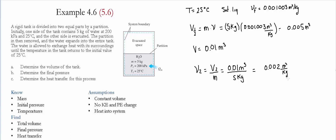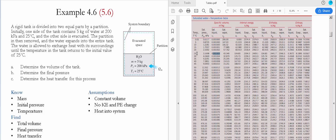We go to table A4 to see how the specific volume compares to the ranges of the saturated liquid and saturated vapor. At 25 Celsius, the value of 0.002 is between the saturated liquid and saturated vapor, which means we have a saturated mixture. For this saturated mixture the pressure is the saturated pressure, equal to 3.1698 kilopascals, and that is the final pressure for this process.